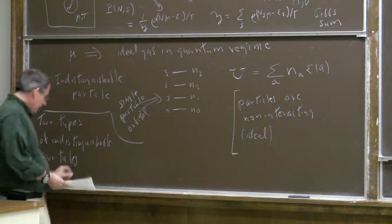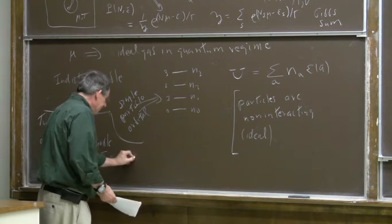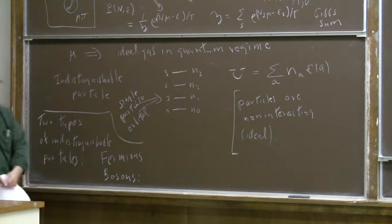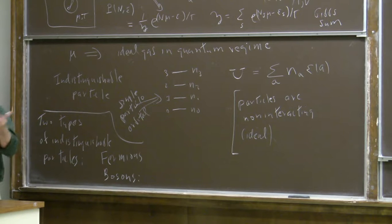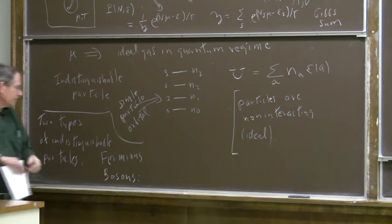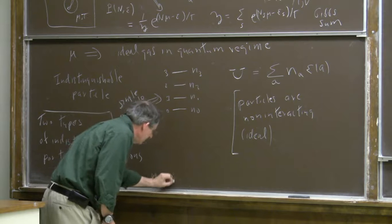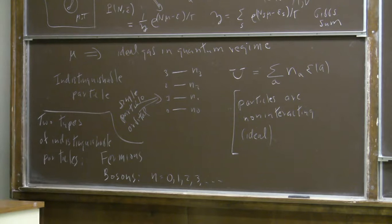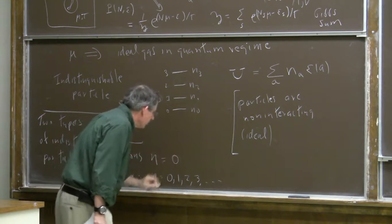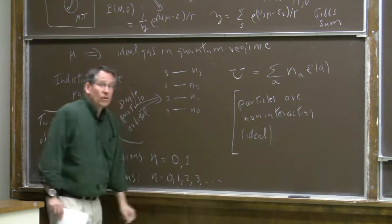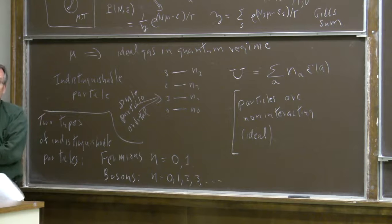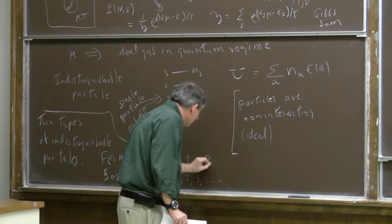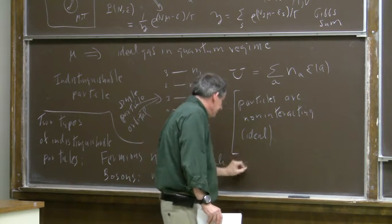The two types of indistinguishable particles are fermions and bosons. For bosons, the occupation number of an orbital can be any non-negative integer: empty, one particle, two particles, and so on. For fermions, there are only two possibilities: either the orbital is empty or it's occupied. Once it's occupied, no further particles can be added—that is called the Pauli exclusion principle for fermions.